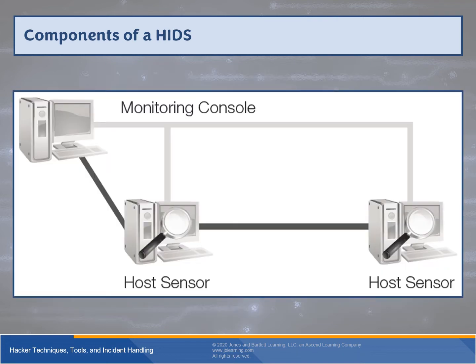With HIDS, instead of a network sensor, sensors are placed directly on individual hosts. Think of it like direct reporting from each host to the monitoring console, versus a NIDS where a network sensor acts as an intermediary. The command console is essentially the same, but the monitoring agent is specific to each host and monitors changes to permissions, system settings, file modifications, and other suspicious activity.